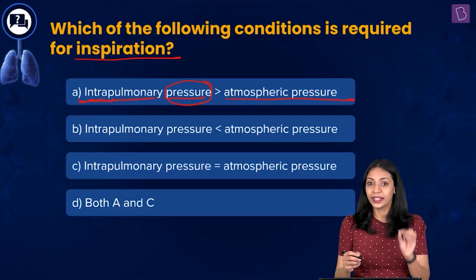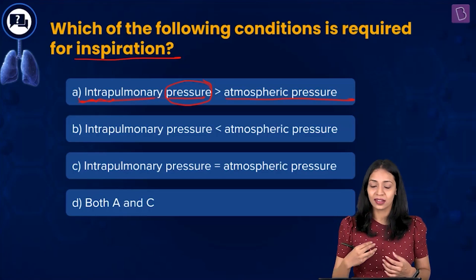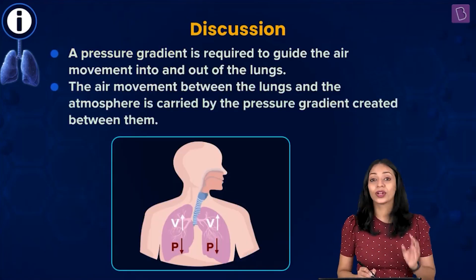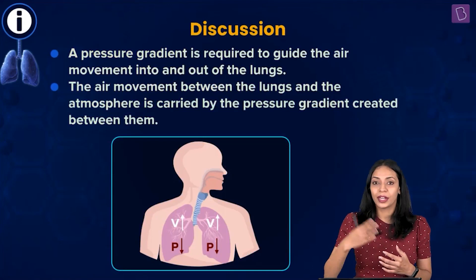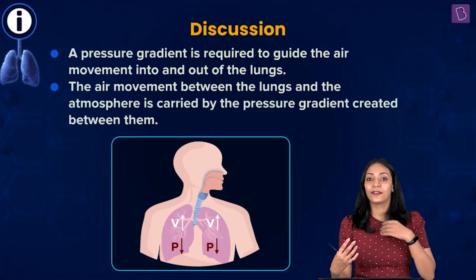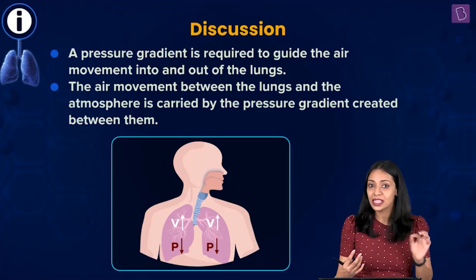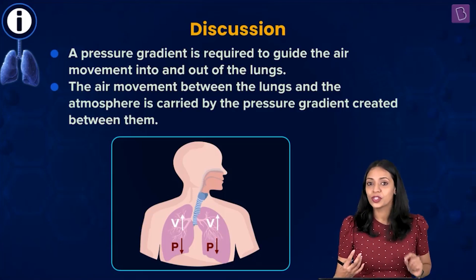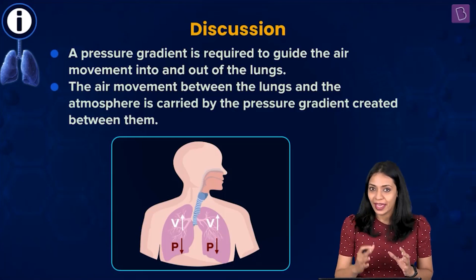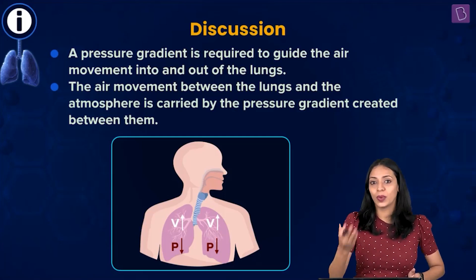For air to move into and out of the lungs, a pressure gradient needs to exist. A pressure gradient means there should be a difference between atmospheric pressure and intrapulmonary pressure. If they are both equal, there won't be any net movement of air. Air will spontaneously always move from a region of greater pressure to a region of lesser pressure.